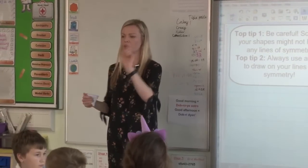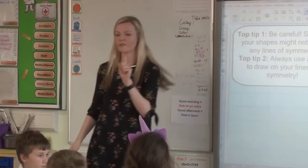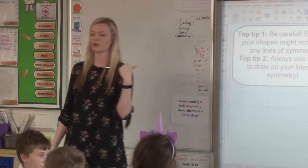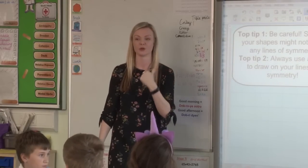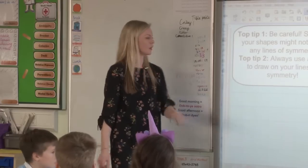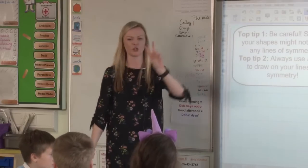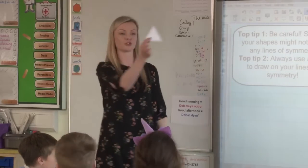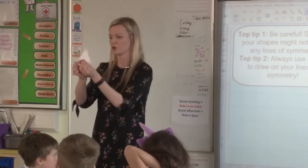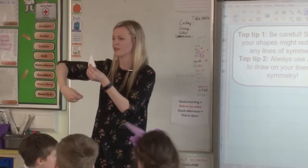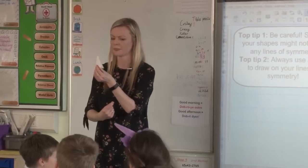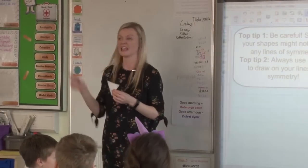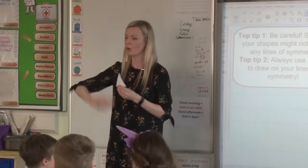Two top tips before we start. Top tip number one: some of your shapes might not have any lines of symmetry — I didn't show you any shapes that didn't, but some of yours might. Top tip number two: always use a ruler to draw on your lines of symmetry. If you're going to draw these on, get a ruler and use a pencil. We must use a ruler because you'd never see any curved lines of symmetry — they're always straight.